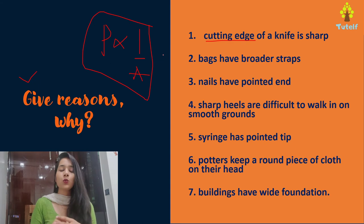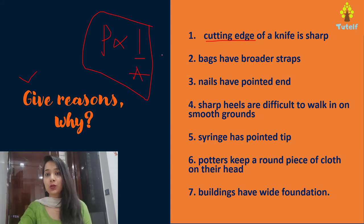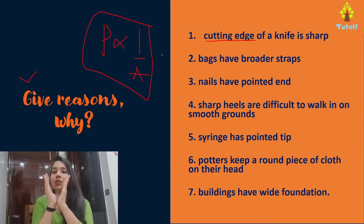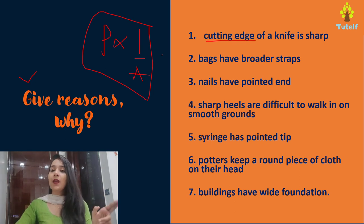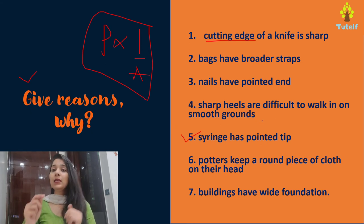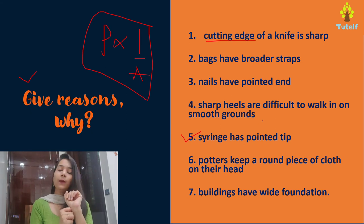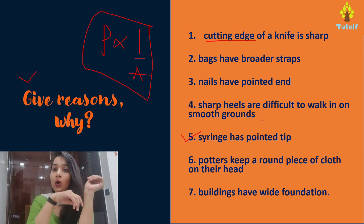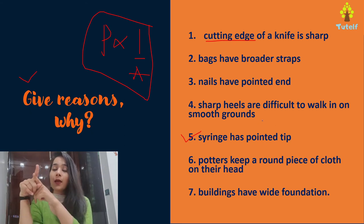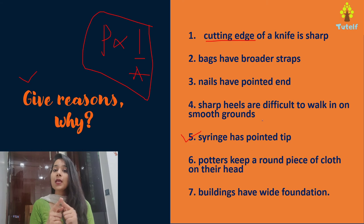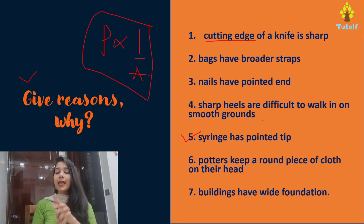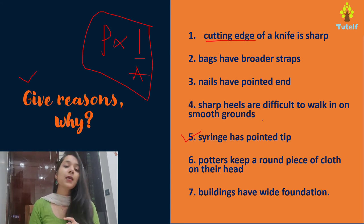Fourth, sharp heels are difficult to walk in on smooth ground because the pointed end has lesser surface area, meaning more pressure is applied since pressure is inversely proportional to area. Fifth, a syringe has a pointed tip so that it can penetrate your skin — the pointed tip means less area and therefore more pressure.